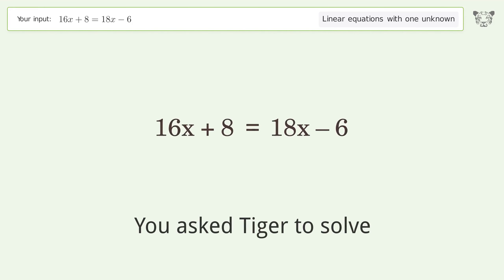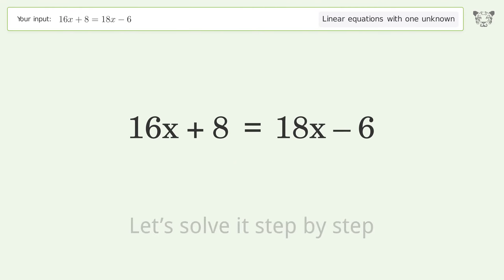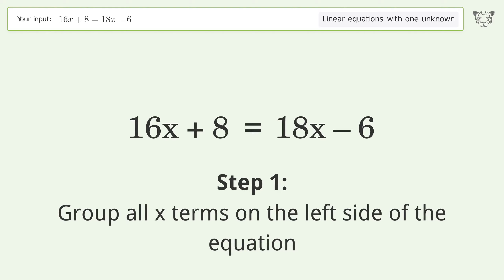You asked Tiger to solve this, which deals with linear equations with one unknown. The final result is x equals 7. Let's solve it step by step. Group all x terms on the left side of the equation.